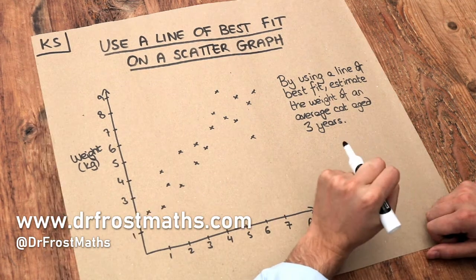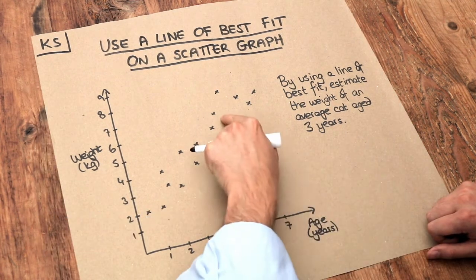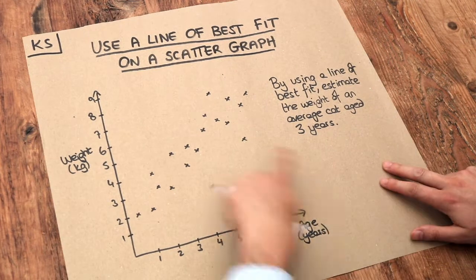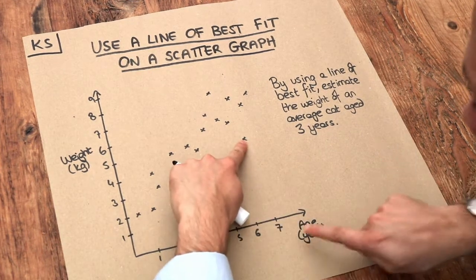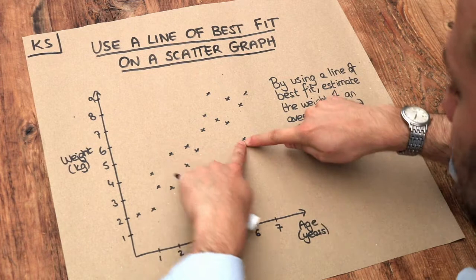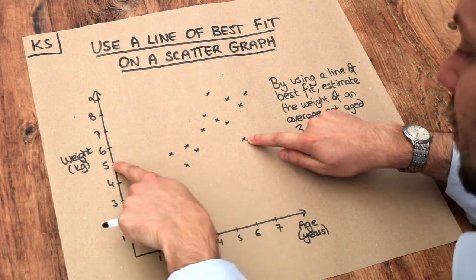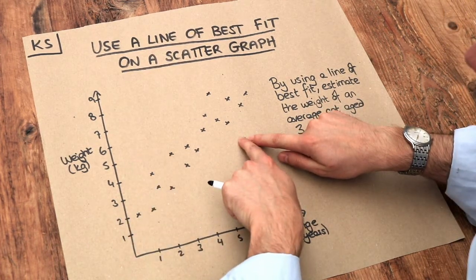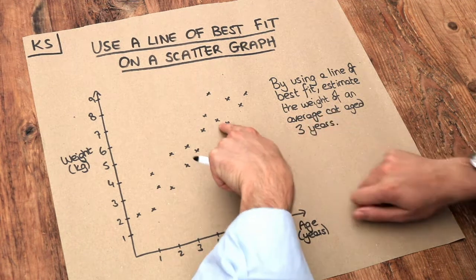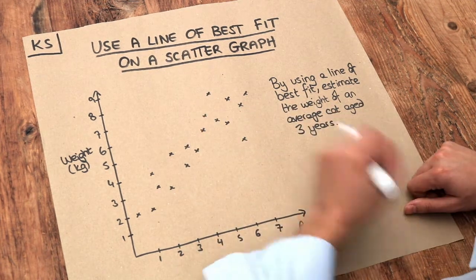Now remember, we use a scatter graph if each of our data points involves two values. So this cat here, for example, has a particular age—an age of seven—and we can see that cat has a weight of five kilograms. So we have two values associated with each point in the diagram, and that's what we use a scatter graph for.